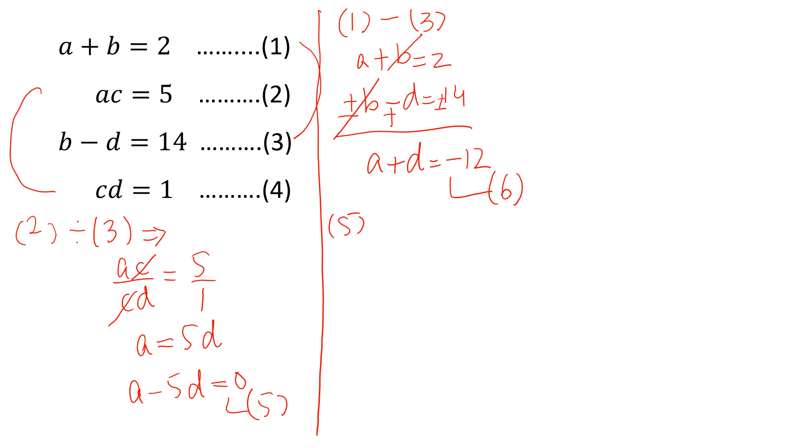Now equation 5 minus equation 6. A minus 5D is equal to 0, A plus D is equal to minus 12. This is plus, this will be minus, this will be minus and this minus will be plus. These are cancelled, and minus 6D is equal to 12. So D is equal to minus 2. We have found one value.